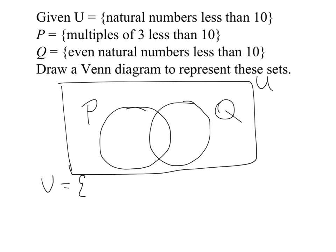Now, we know natural numbers are all numbers from one above whole numbers. So it's going to be 1, 2, 3, 4, 5, 6, 7, 8, and 9.